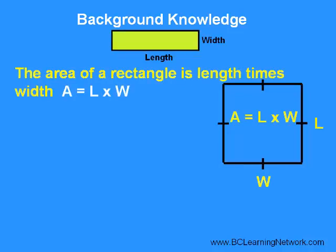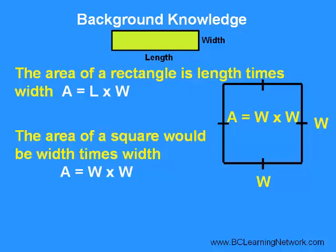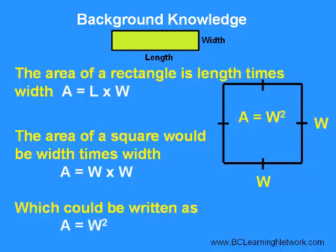Next, you may recall the area of a rectangle is length times width. Since the square has four equal sides, its area can be thought of as being width times width. W times W can be written as W to the power of 2. And in math, anything to the power of 2 is said to be squared. So our formula becomes A equals W squared.